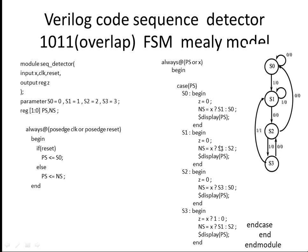To understand this code, first we should know the state diagram — how all the states are changed. Since the sequence is four bits — 1, 0, 1, 1 — we have four states: S0, S1, S2, and S3. This is your first state. This is your LSB and this is your MSB. If you're getting 1 you have to go to the next state; if you're getting 0, you should go to the next state; and like that, the sequence continues.